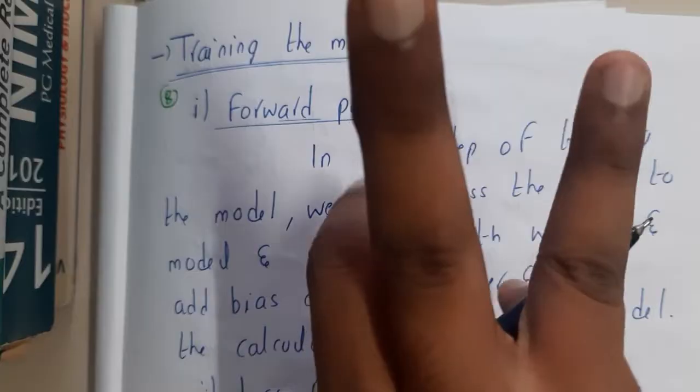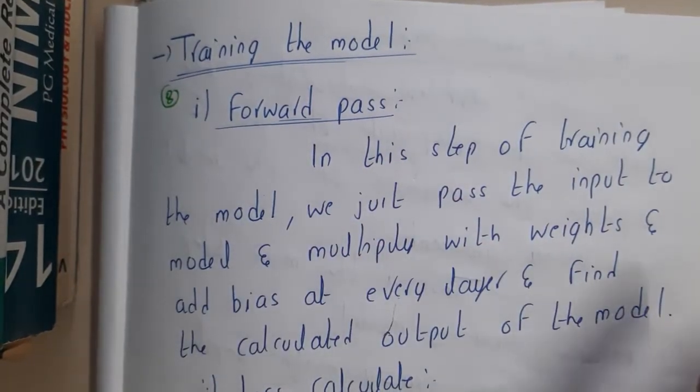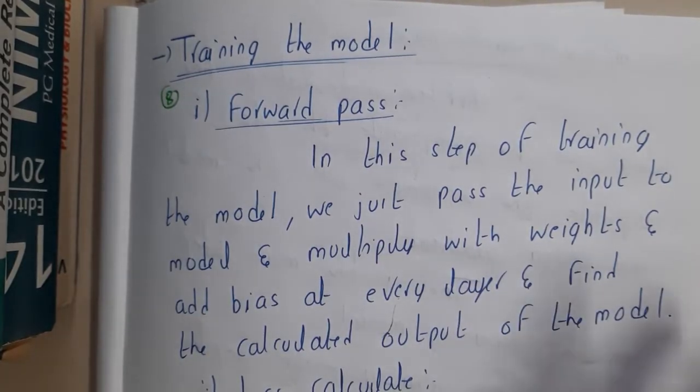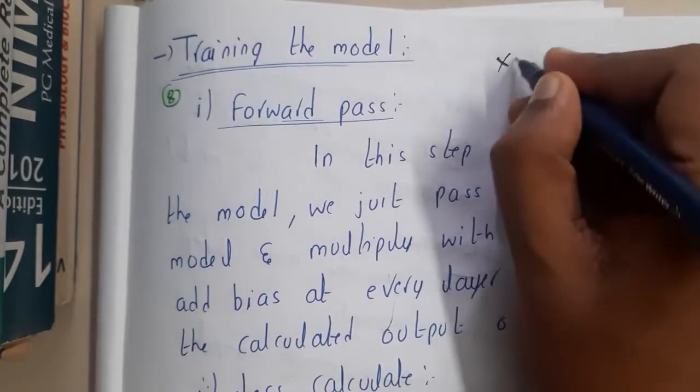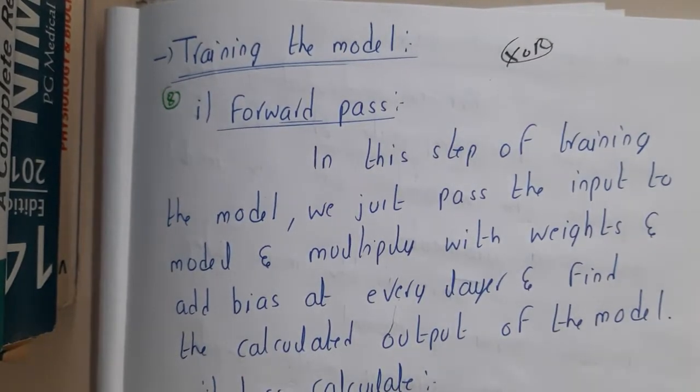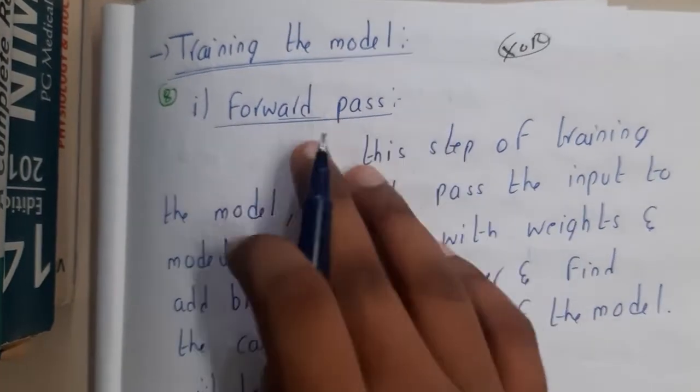forward pass, the second is loss calculation, and after that, backpropagation and updating the values. I'll be sharing the concept and a problem of XOR. Basically, most of you have been asking me about the XOR solution to be solved. I'll be writing it and sharing it as soon as possible, so don't worry about it. Let's start.